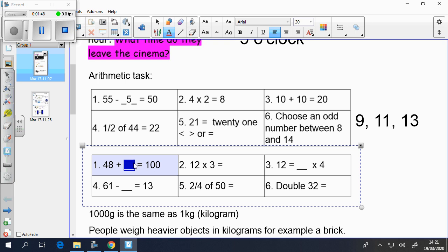48 plus 52 is 100. 12 times 3 is 36. 12 equals something times 4. It's 3 times 4. 61 take away 48. 2 quarters of 50 is the same as half of 50, and that's 25. Double 32 is 64.